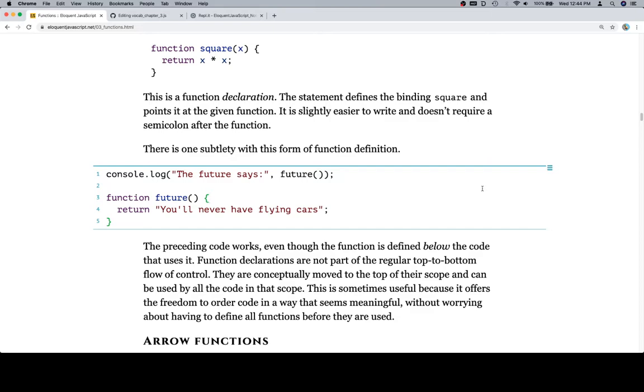Function declarations are not part of the regular top-to-bottom flow of control. They are conceptually moved to the top of their scope and can be used by all the code in that scope. This is sometimes useful because it offers the freedom to order code in any way that seems meaningful without worrying about having to define all functions before they are used.